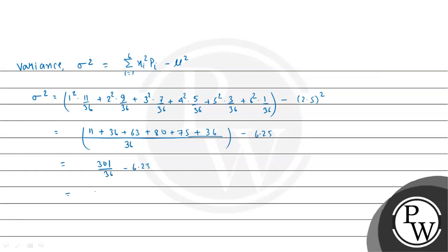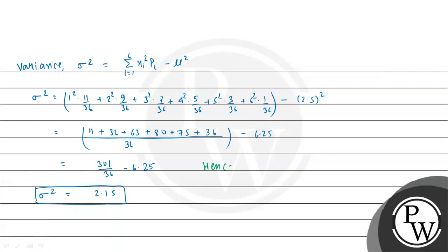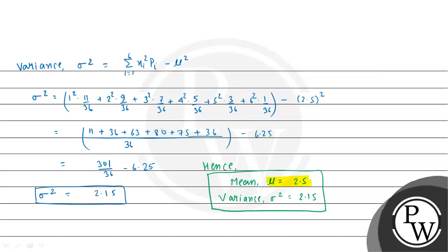In decimal form, 301/36 − 6.25 gives sigma square equal to approximately 2.15. So the final answers for the given question are: mean (mu) = 2.5 and variance (sigma square) = 2.15. I hope you understood the solution. Best of luck, thank you.